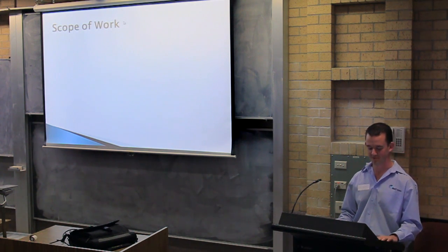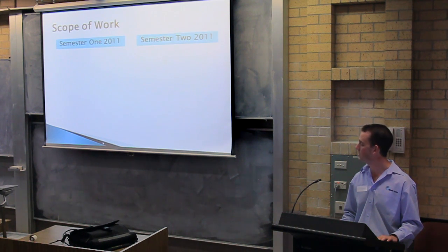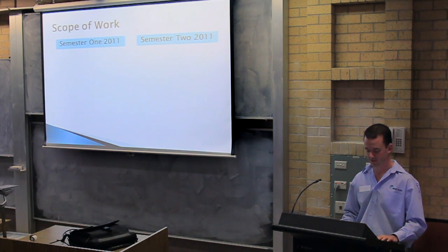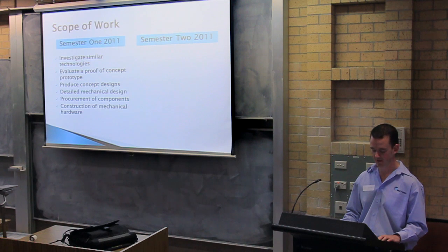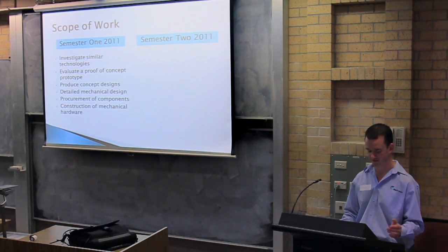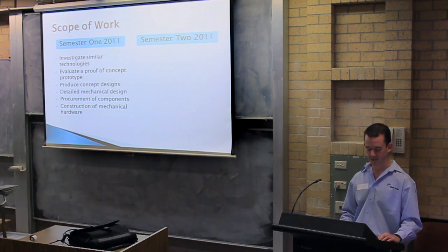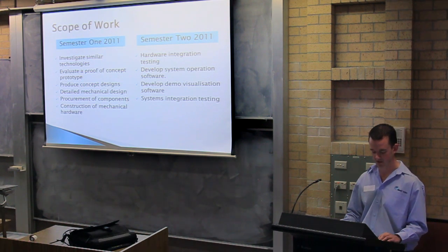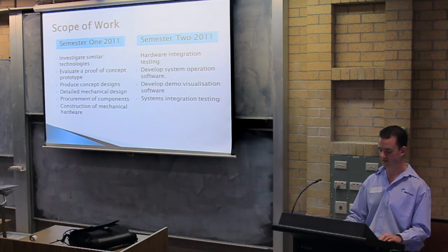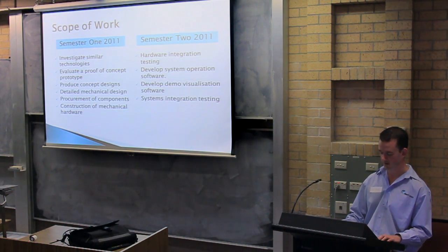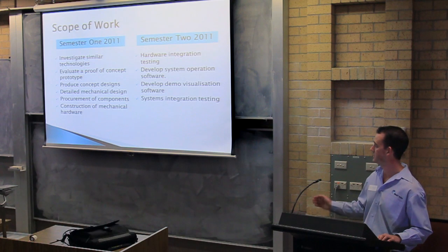So what did I set out to achieve in my project? I decided to break the scope of my project up into two stages, to be completed in Semester 1 and Semester 2. The primary objective of Semester 1 was to bring the project to the stage where all the hardware systems had been taken care of. This required investigating similar technologies, constructing and assessing a proof-of-concept prototype, followed by the design and construction of the final hardware solution. With the mechanical systems under control, I was able to focus my efforts in Semester 2 on the development of the required software components. After confirming that the hardware can perform as desired, I was able to commence work on the system's main operation software, followed by the development of a demo visualization package. And after all this, the project was finalized with successful integration testing.